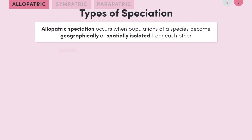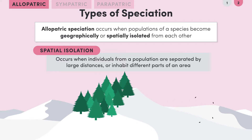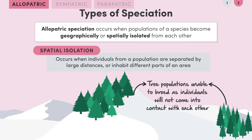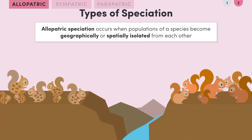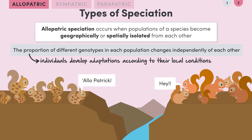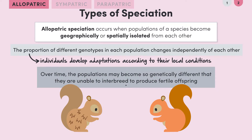Allopatric speciation could also occur due to spatial isolation — when individuals from a population become separated by really huge distances, or when they inhabit different parts of an area. This might happen if the seeds of an alpine tree population are carried particularly far away one year due to unusually high winds and a new population colonises. Due to the distance between them, the two tree populations are unable to breed. Whether it's geographic or spatial isolation, the individuals just wouldn't come into contact with each other. The squirrel example is a form of allopatric speciation. The result is that the proportion of different genotypes in each population changes independently, individuals develop adaptations according to their local conditions, and over time the two populations may become so genetically different that they can't interbreed to produce fertile offspring.